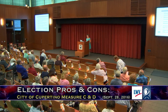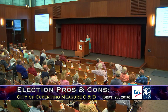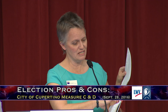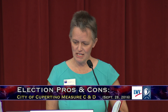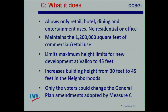Only the voters would be able to change those general plan amendments adopted by Measure C. One of the more contentious provisions increases building height from 30 feet to 45 feet in the neighborhoods — this has been the subject of considerable argument and gets its very own slide in this presentation. All the changes in C would need to return to the voters; if the voters vote them in, it would be only the voters who could remove them.